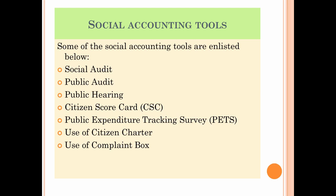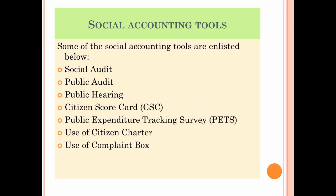Some of the main tools used in social accounting include social audit, public audit, public hearing, citizen scorecards, public expenditure tracking survey (PETS), use of citizen charter, and use of complaint boxes. All these tools are used to assess and communicate the impact of an organization's economic activity over society.